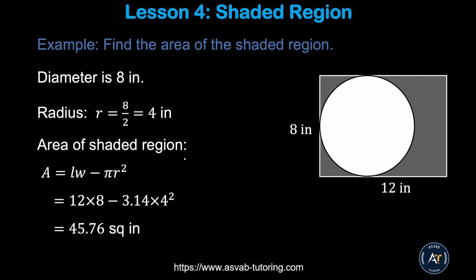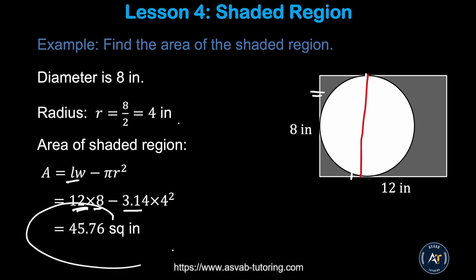Now we'll learn how to find shaded area. You find the area of the rectangle, then find the area of the circle, and subtract. The width of the rectangle equals the diameter of the circle, which is 8, so the radius is 4. The shaded area equals area of the rectangle minus area of the circle: 12 times 8 minus 3.14 times 4 squared, giving you 40.76 square inches.